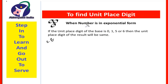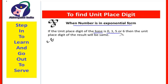To find the unit place digit when the number is in exponential form, the rule is: if the unit place digit of the base is 0, 1, 5, or 6, then the unit place digit of the result will be the same.